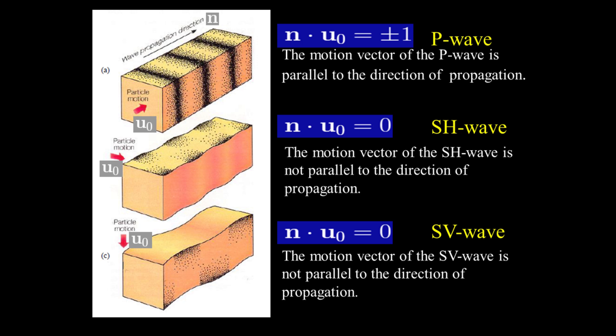For P waves, the motion vector U0 is parallel to the direction of propagation N. For S waves, the motion vector U0 is not parallel to the direction of propagation N. The motion vector U0 describes the polarization of the shear wave.